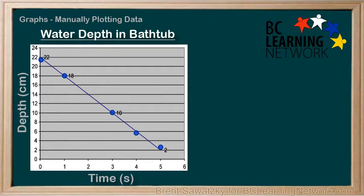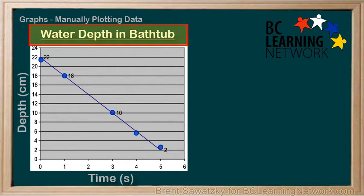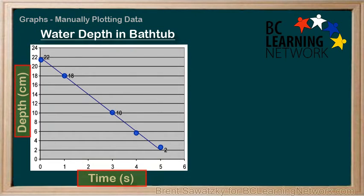Let's analyze an example graph to get a feel for interpreting graphs. Our example graph is based on five data points and has a best fit line drawn through it. It has a clear, understandable title: Water Depth in a Bathtub. Our axis titles let us know what we're watching — the change in depth on the y-axis, over time on the x-axis.